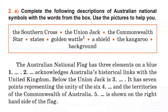Let's go into detail and complete the descriptions of Australian national symbols. Pause the video for a minute, then move on to the second part of the text. You have a minute to insert the missing words, which are: the Southern Cross, the Union Jack, the Commonwealth Star, State, Golden Wattle, shield, the Kangaroo, and background. If you find it more convenient, you can open your books at page 114 and read the text there.